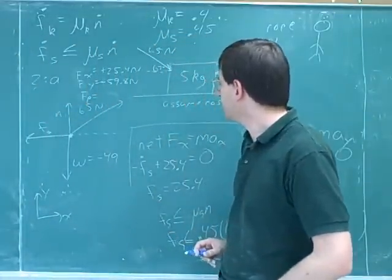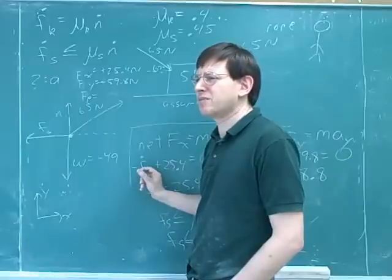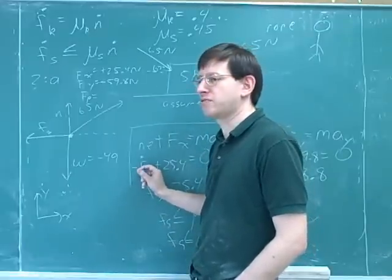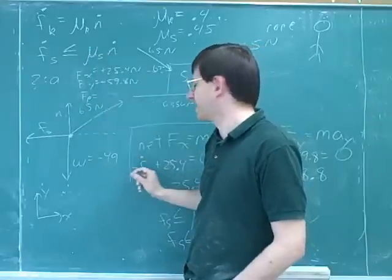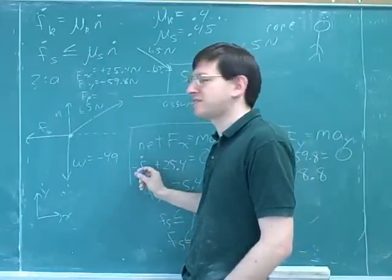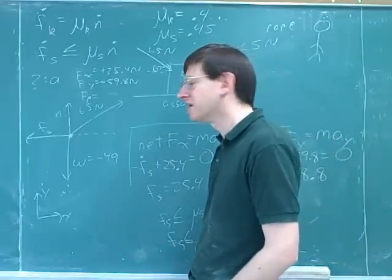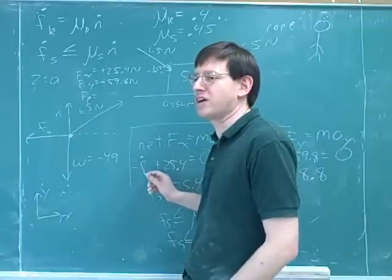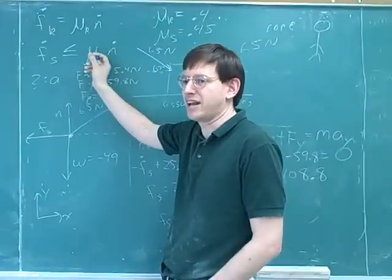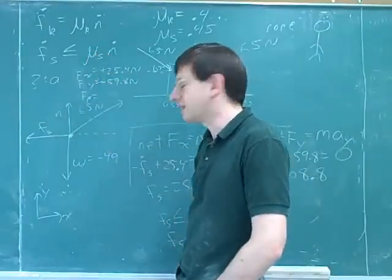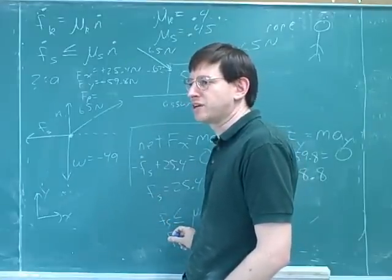Also, let me point out something here. Notice that I didn't plug in mu_s times n into this formula. Sometimes some instructors and TAs would plug mu_s times n into this formula, but I don't like to do that because, again, remember, this is not a formula for calculating the static friction. I think it's better just to leave this as the static friction and then just compare it to this inequality over here. There are other ways to solve this, but I think this is best because otherwise people start to think that this formula calculates the static friction. So a good technique here is just leave this as the static friction and then simply compare what we get to this over here.